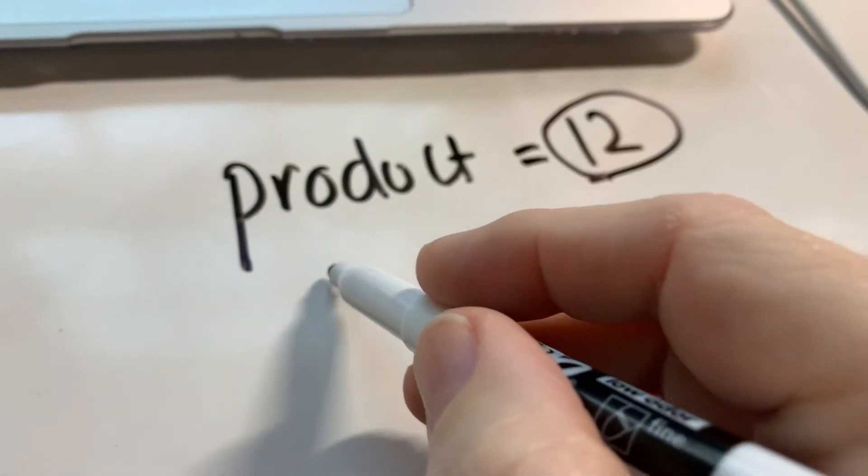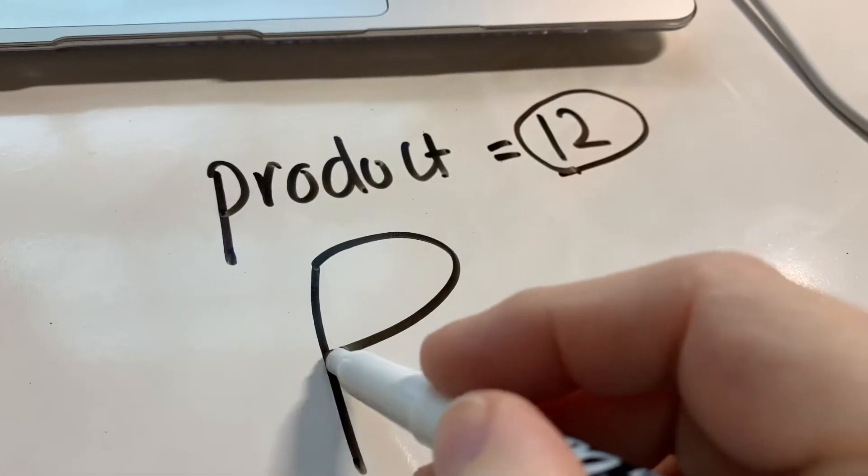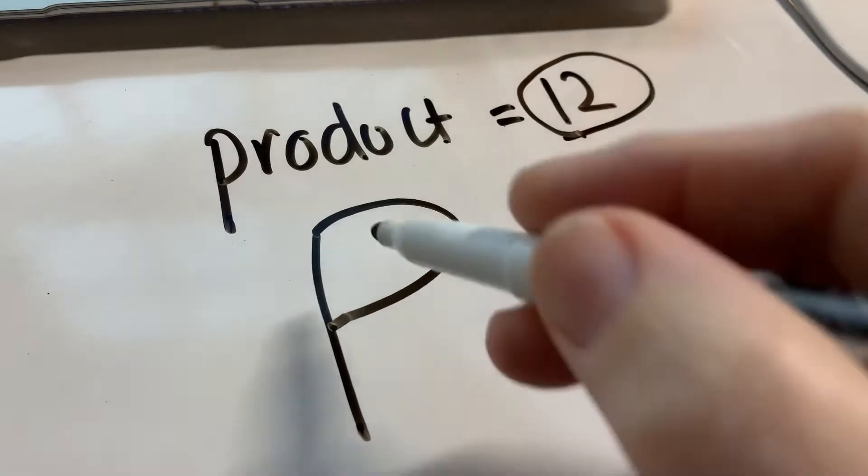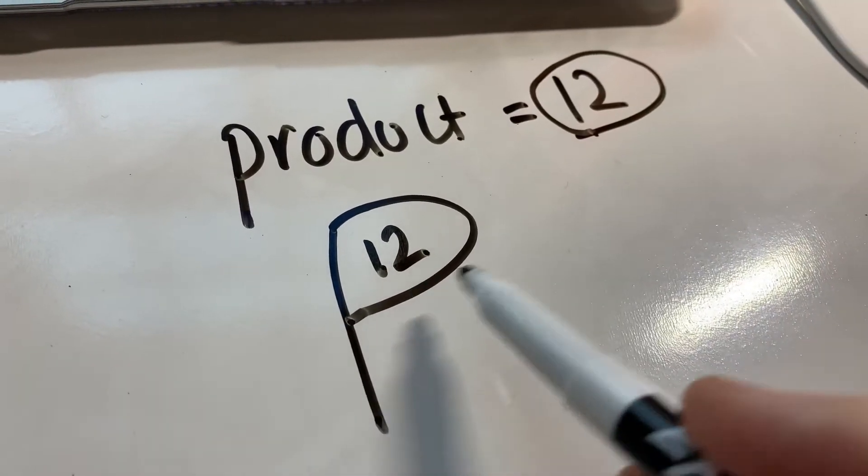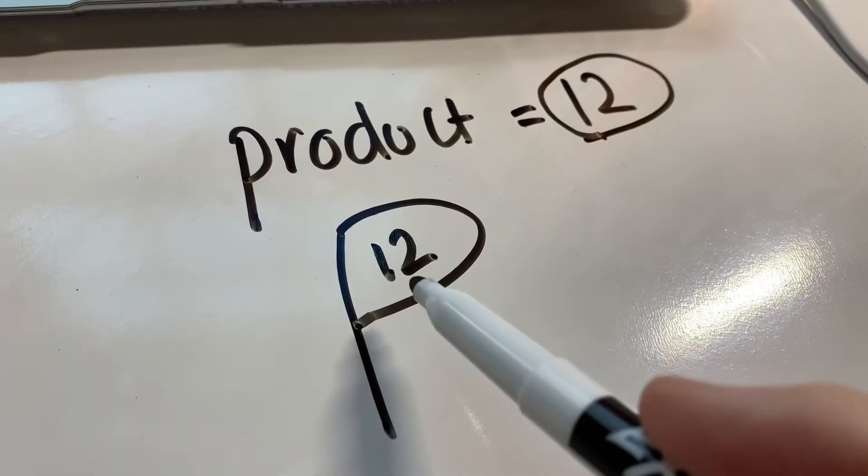The way that I remember what a product is, I draw a big giant P, P for product, and I put the product inside it. It's not wide open, it's just big enough to fit the answer in.